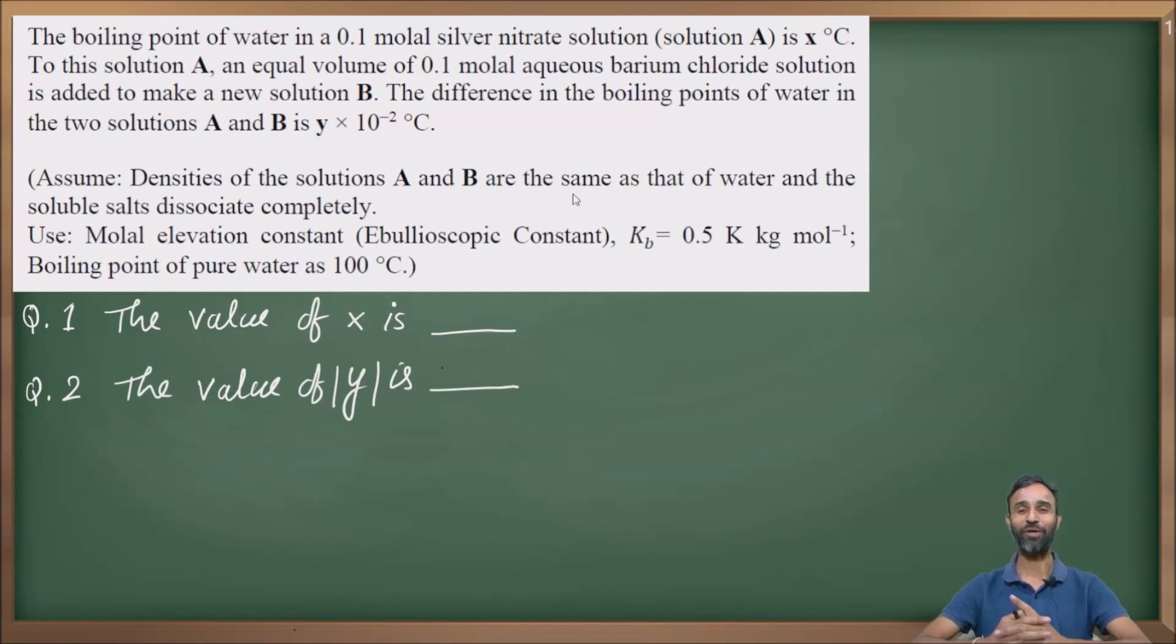Hello everyone. Welcome back to my channel. I am Dr. Suresh Thakur, your chemistry mentor. Today we have a question from the solution chapter of class 12. This question is from JEE Advanced 2021 and it is related to elevation in boiling point. You know that is part of colligative properties of the solution chapter.